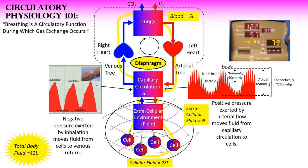Blood should flow in this circle unimpeded, and it should move very much as a pendulum swings — it's a sinusoidal affair. When we inhale, blood flows freely from the capillary circulation, filling the venous tree and ultimately the lungs with blood. And as we exhale naturally, blood leaves the lungs flowing through the left heart and into the arterial tree. This circulation occurs with every breath we take when breathing is slow, deep, and rhythmic.